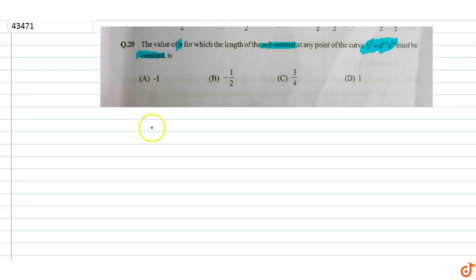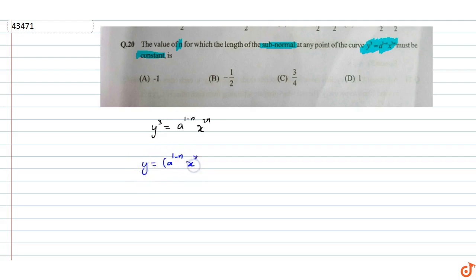We are given y³ = a^(1−n) · x^(2n). So y equals a^(1−n) · x^(2n) raised to the power 1/3, since we take the cube root. Now we find dy/dx.